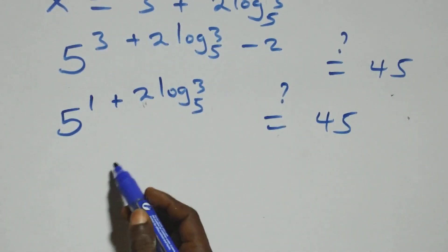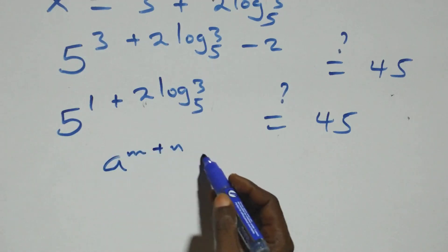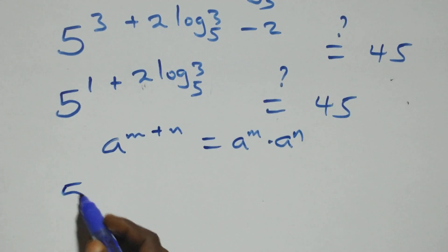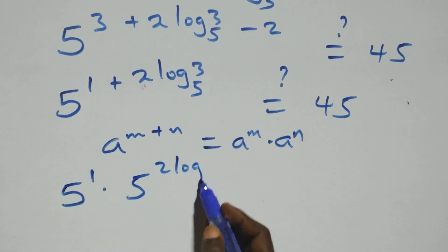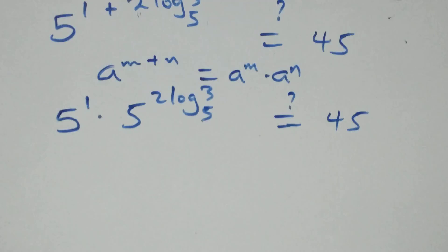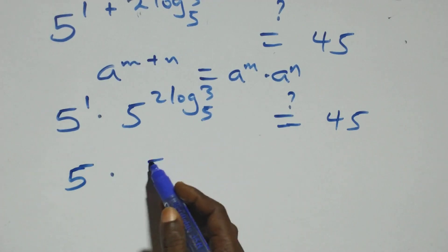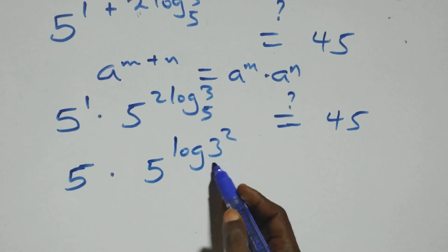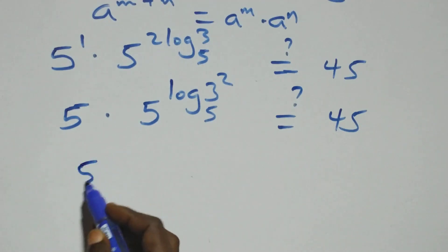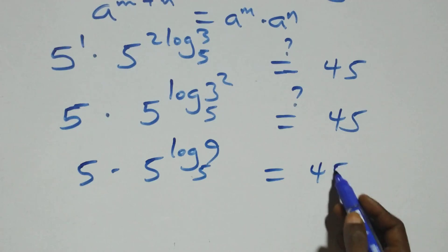We apply the law of indices: a raised to power n plus n is the same thing as a raised to power n times a raised to power n. So here we have 5 raised to power 1 times 5 raised to power 2 log 3 base 5, equals 45. And 5 raised to power 1 is 5. Then we can rewrite 5 raised to power log 3 squared base 5, which becomes 5 times 5 raised to power log 9 base 5, equals 45.